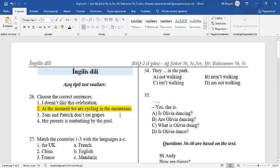3. Tom and Patrick don't eat grapes. Tom and Patrick, they don't eat grapes. It's a correct sentence. Her parents is sunbathing by the pool. It's an incorrect sentence. We must say her parents are sunbathing by the pool. 2 and 3 are correct sentences.